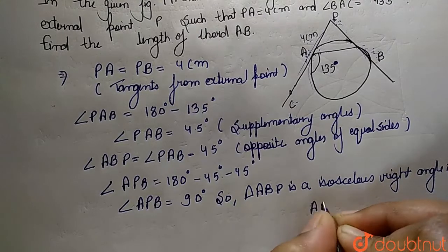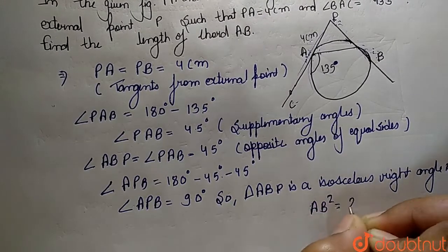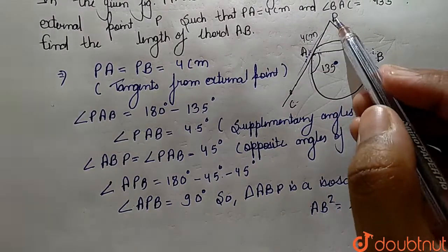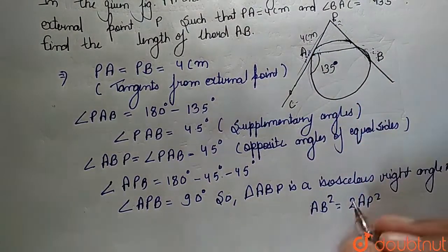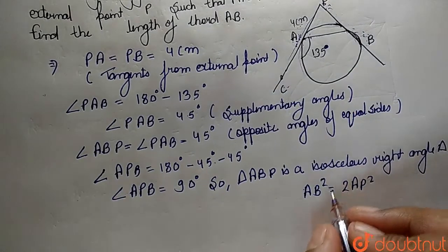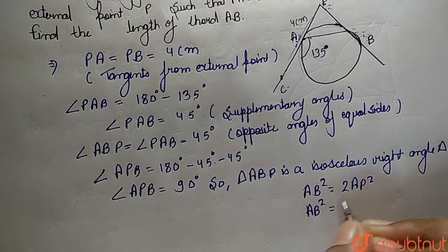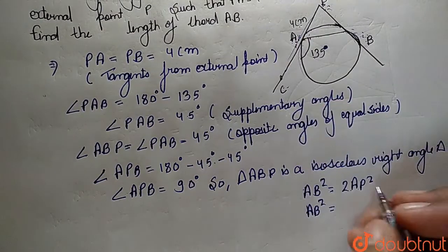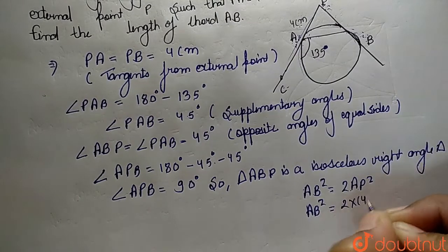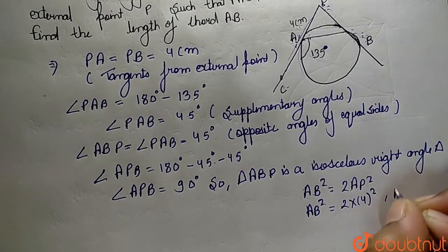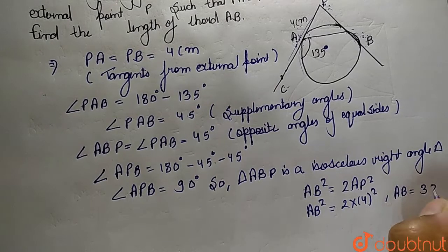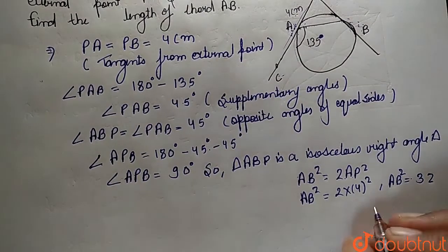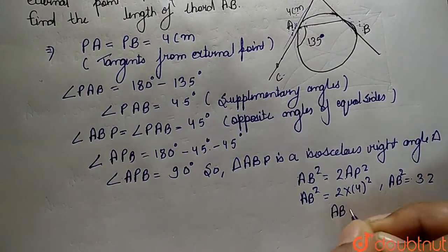For this right angle triangle, the hypotenuse AB squared equals 2 times AP squared, since both legs are equal. So AB squared equals 2 multiplied by 4 squared, which is 2 multiplied by 16, giving AB squared equals 32.